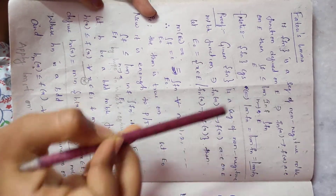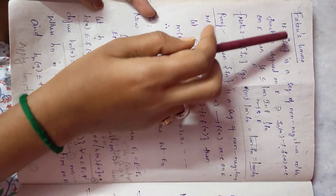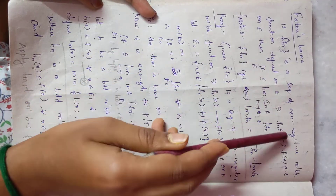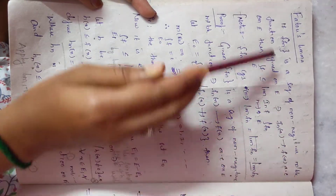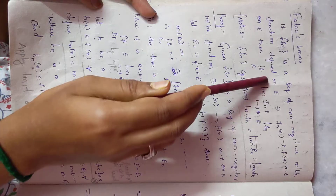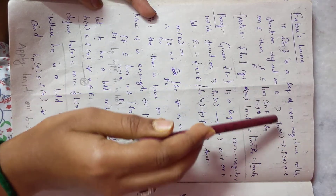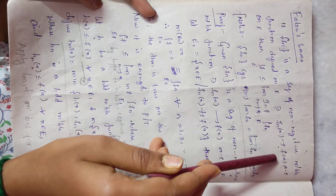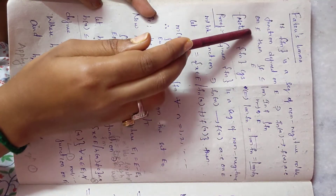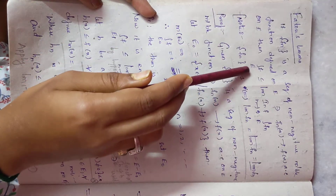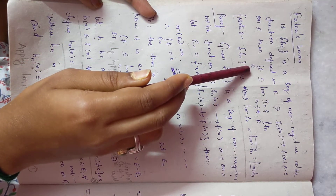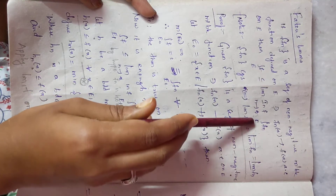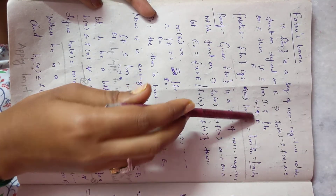Now we are going to prove Fatou's Lemma. Given: if f of n is a sequence of non-negative measurable functions defined on a measurable set E, such that fₙ(x) converges to f(x) almost everywhere on E, then we have to prove that the integral of f over E is less than or equal to the limit infimum of the integral of fₙ over E.